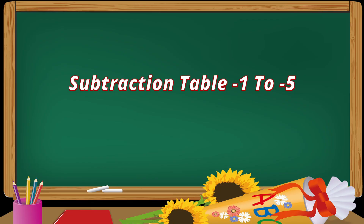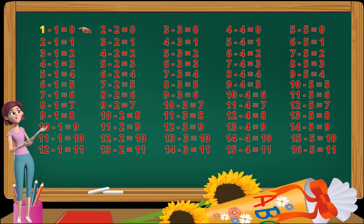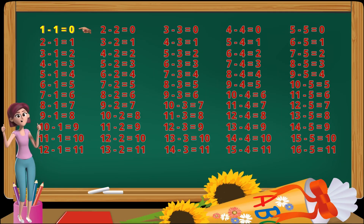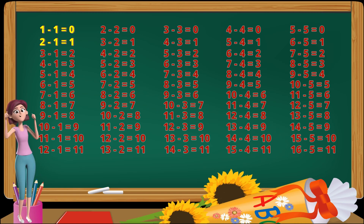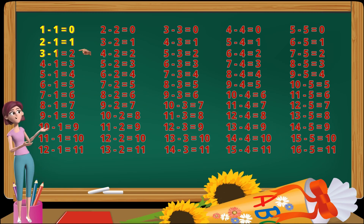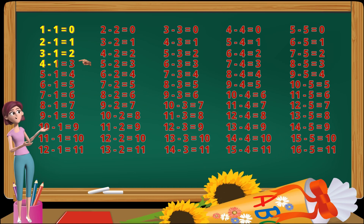Subtraction Table Minus 1. 1 minus 1 equals 0. 2 minus 1 equals 1. 3 minus 1 equals 2. 4 minus 1 equals 3.